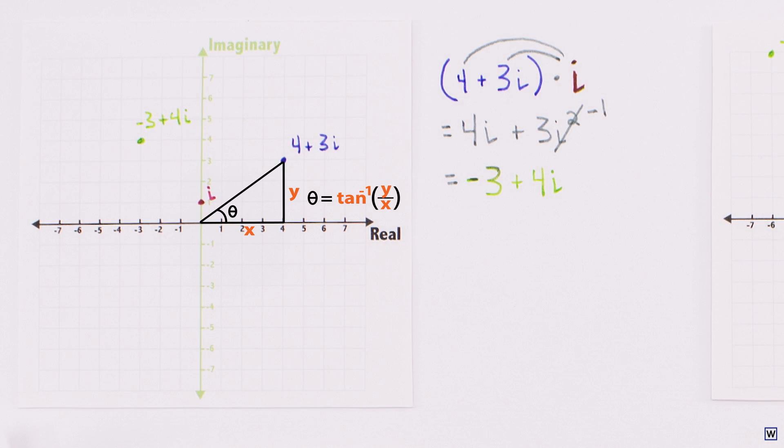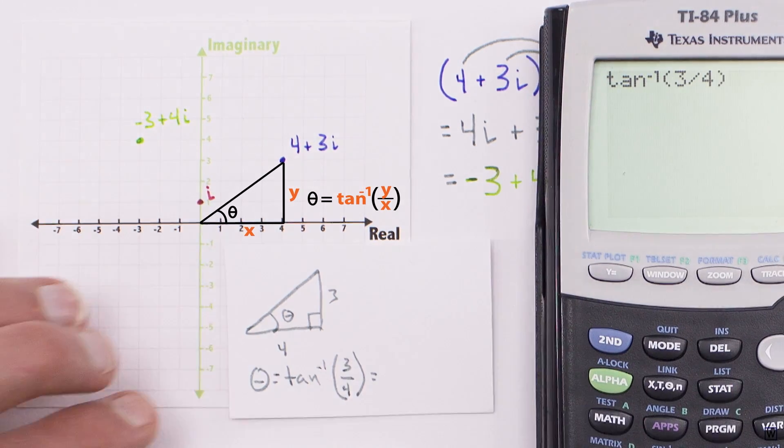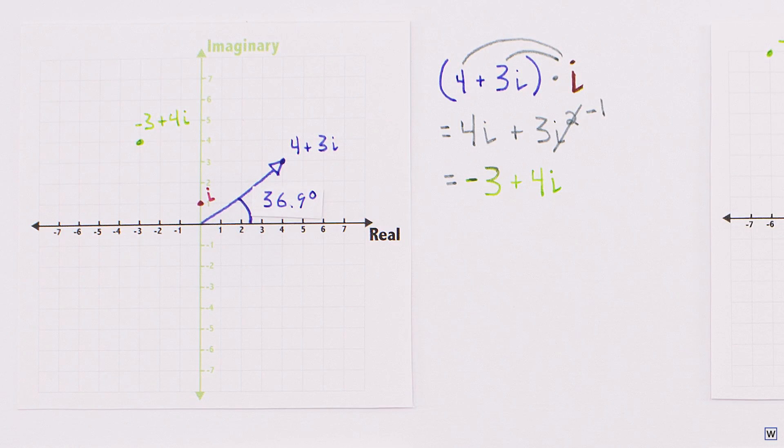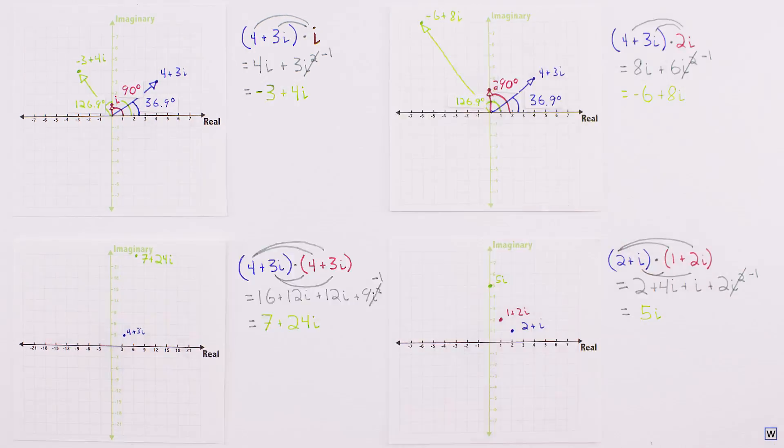We can determine our angles using a little trigonometry, specifically the arc tangent function. Now let's look for a connection between our three angles.